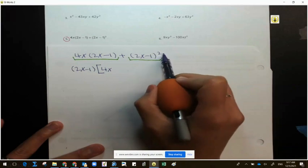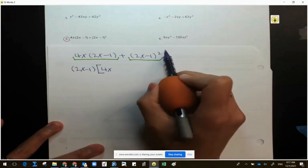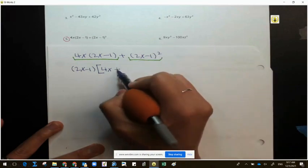From my second term, I've already taken out one of the 2x minus 1. So I have one remaining.